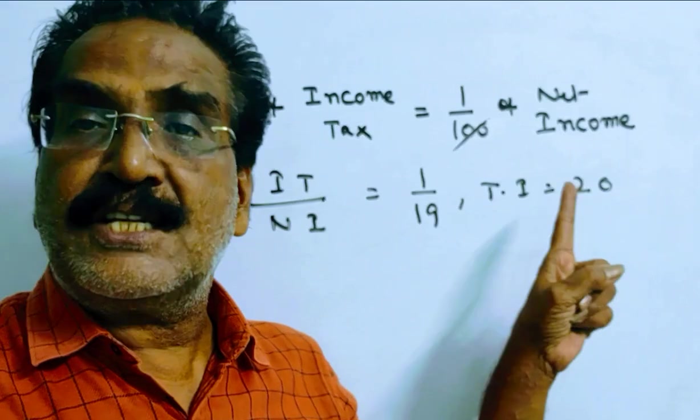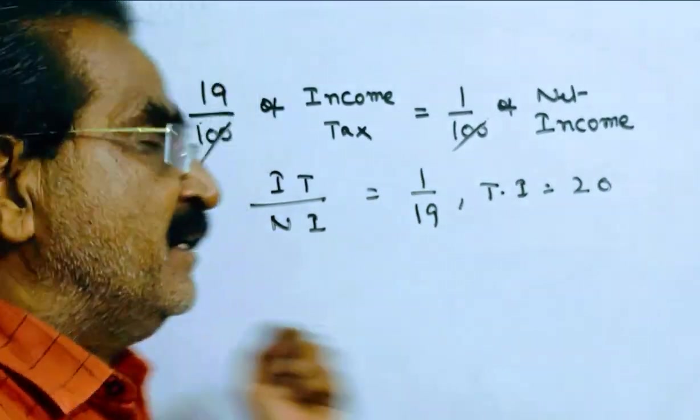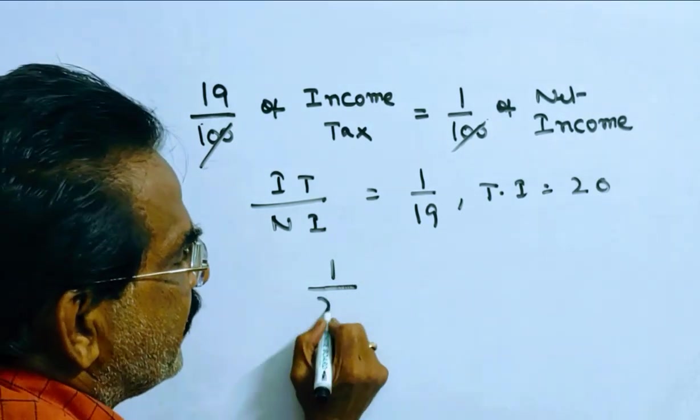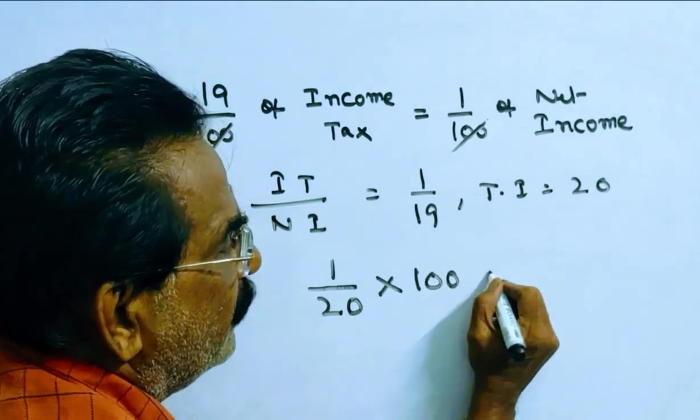Friends, now the total income is 20, tax is 1. Now the tax rate is equal to tax over taxable income into 100.